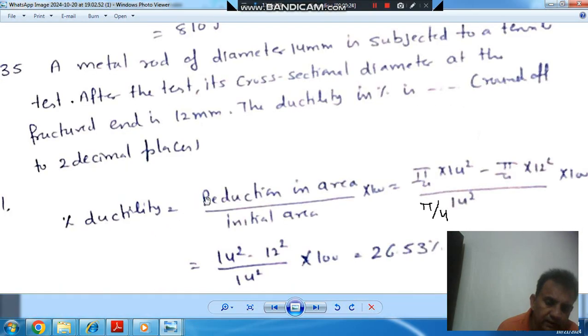So, percentage ductility is reduction in area divided by initial area times 100. Reduction in area is initial area minus final area. That is negative, so taking the positive: initial area minus final area. This is reduction in area.